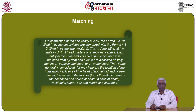On completion of the half-yearly survey, Forms 9 and 10 filled in by the supervisors are compared with Forms 4 and 5 filled in by the enumerators. This is done either at the state or district headquarters or at regional centers. Each entry in the enumerator's and supervisor's record is matched item by item, and events are classified as fully matched, partially matched and unmatched. The items generally considered for matching are the location of the household, name of head of household and house number, the name of the mother for births, and name of the deceased and cause of death in case of deaths, residential status, sex and month of occurrence.